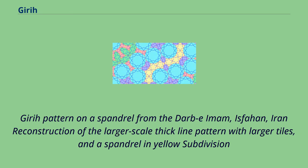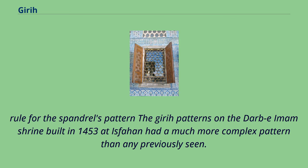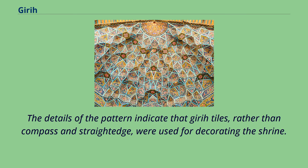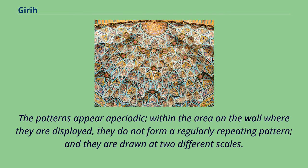The girih patterns on the Darb-i Imam shrine, built in 1453 at Isfahan, had a much more complex pattern than any previously seen. The details of the pattern indicate that girih tiles, rather than compass and straightedge, were used for decorating the shrine. The patterns appear aperiodic: within the area on the wall where they are displayed, they do not form a regularly repeating pattern, and they are drawn at two different scales.